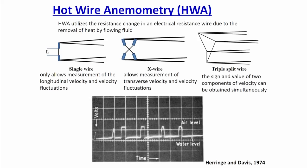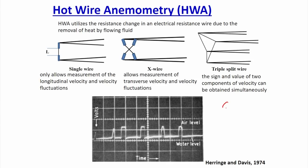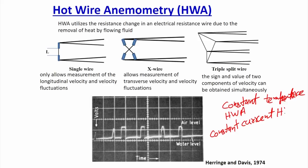A new technique called the hot wire anemometer was developed to overcome Pitot tube limitations. For single-phase flow, the hot wire anemometer is very accurate and most turbulence analysis has been done with it. Because it was very accurate for single-phase flow, the same technique was applied to multi-phase flow reactors. There are two types: constant temperature hot wire anemometer (constant temperature HWA) and constant current hot wire anemometer.